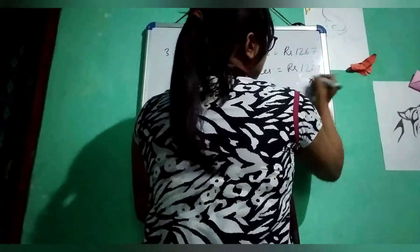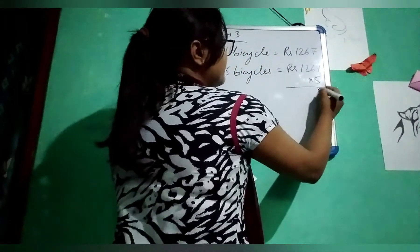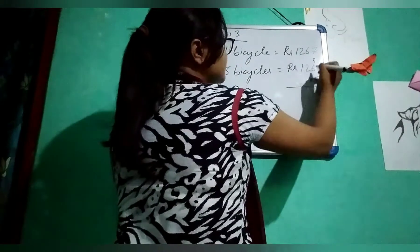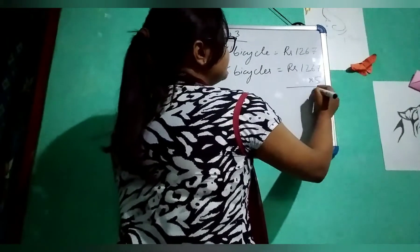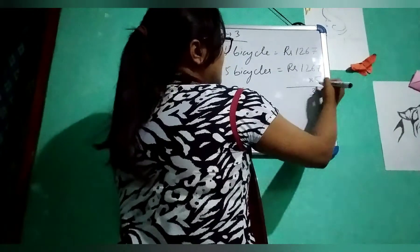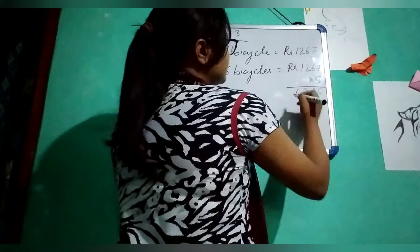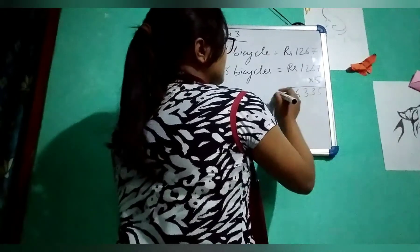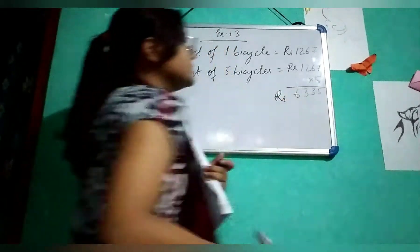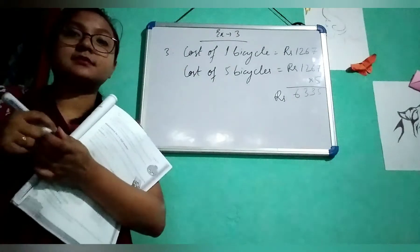When you multiply by 5 it will be: 7 times 5 is 35, write 5 carry 3. 6 times 5 is 30, 30 plus 3 is 33, write 3 carry 3. 2 times 5 is 10, plus 3 is 13, write 3 carry 1. 1 times 5 is 5, plus 1 is 6. So it will be Rs. 6,335. This is the answer.